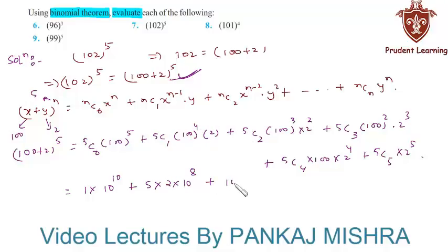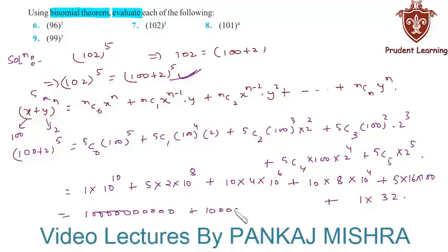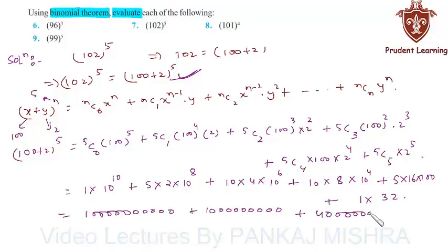Plus 5C1 is 5 into 10⁸. Plus 5C2 is 10, into 2² which is 4, into 100³ which is 10⁶. Plus 5C3 is 10. Plus 5C4 is 5, into 2⁴ which is 16, into 100. Plus 5C5 is 1, into 2⁵ which is 32. We can write 10¹⁰ as 1 followed by 10 zeros, plus 10 into 8 zeros for 10⁸, plus 40 into 6 zeros for 10⁶, plus 10 into 5 is 80 and 2 zeros, plus 32.